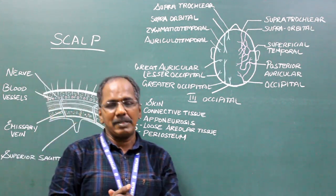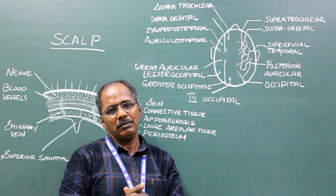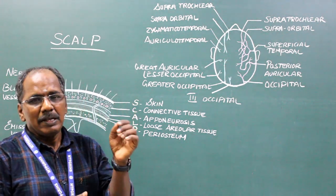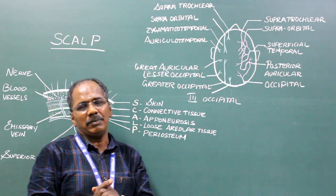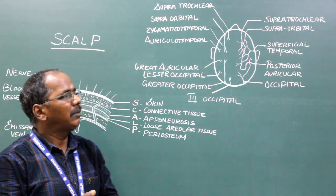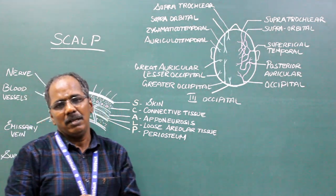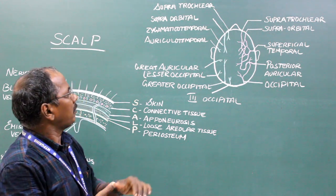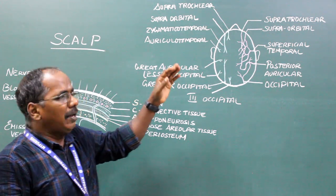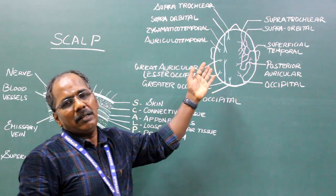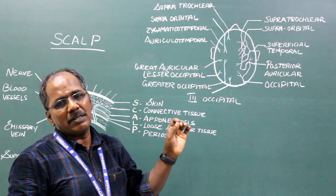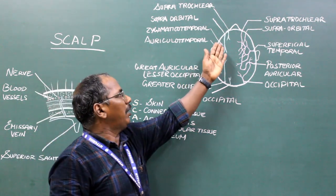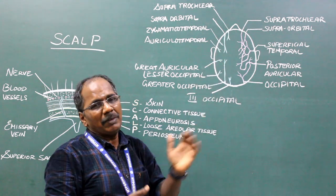Nerve supply of the scalp. The scalp has both sensory and motor nerve supply. The sensory nerve supply consists of eight nerves — four in front of the ear and four behind the ear.